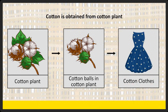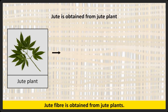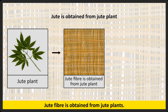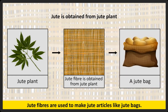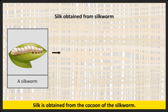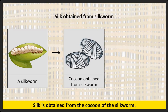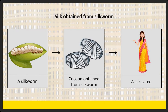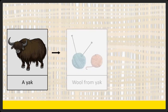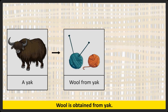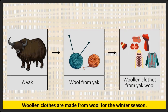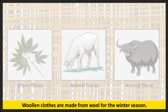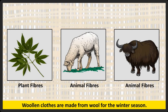Another plant fiber is jute. Jute fiber is obtained from jute plants and is used to make jute articles like jute bags. Silk is an animal fiber obtained from the cocoon of the silkworm, and is used to make sarees and other silk dresses. Another animal fiber is wool, obtained from yaks. Woolen clothes are made for the winter season.